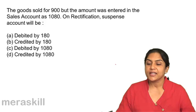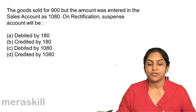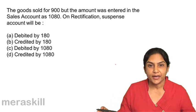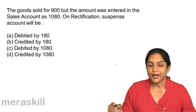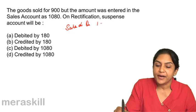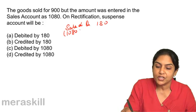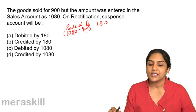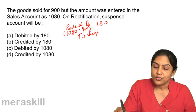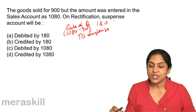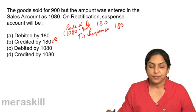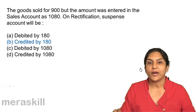In the sales account, there is a credit of 1080, but it should have been only 900. So there is an excess credit of 180. We will debit the sales account by 180 — that is 1080 minus 900. Since sales account is debited by 180, the suspense account would be credited. So on rectification, suspense account should be credited by 180. The correct answer is B, credited by 180.